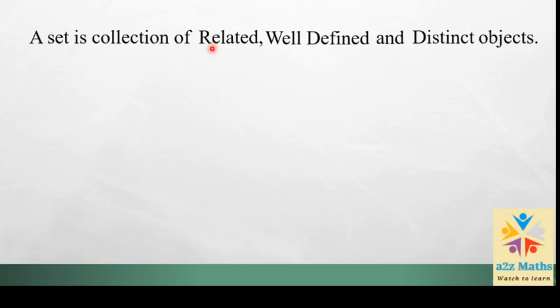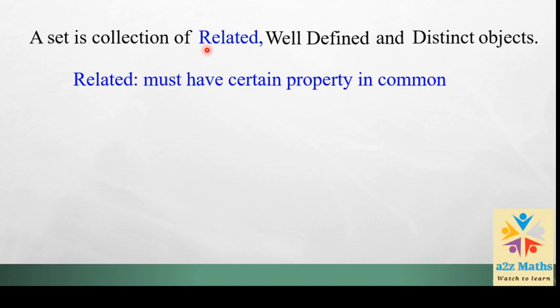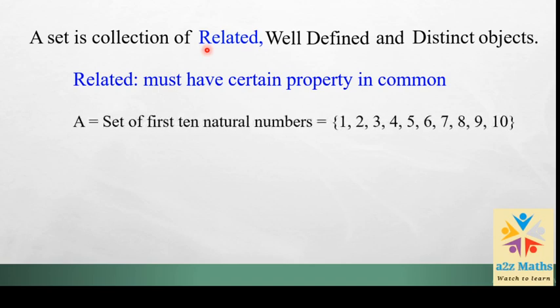For a set, the collection must be of related objects. This means there should be some certain property in common among all the elements. For example, when you say set A is the first 10 natural numbers, it follows the rule of natural numbers from the first 10. All the things which satisfy this criteria are part of this set — an element of this set.